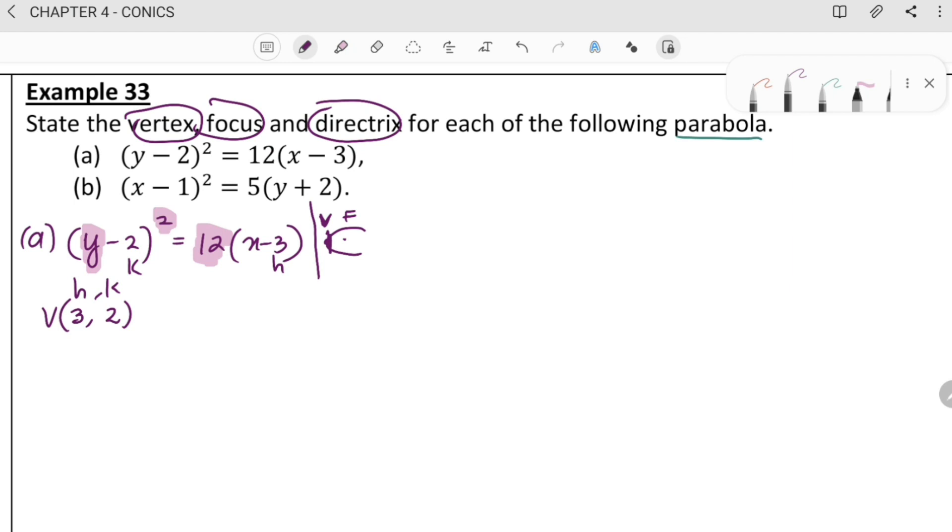Okay, we need to find the value of P. Okay. So, this one. So, 4P is equal to 12. And the P is 3.